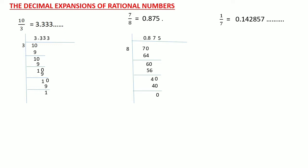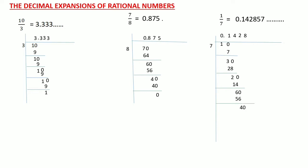Consider another example of a rational number 1 upon 7. Here the dividend is 1 and the divisor is 7. Since the dividend is smaller than the divisor, place a decimal point in the quotient and add a 0. 7 times 1 is 7; on subtraction we get the remainder as 3. Add a 0 — 7 times 4 is 28; on subtraction we get 2 as the remainder. Add a 0; 7 times 2 is 14; on subtraction we get 6 as the remainder. Add a 0; 7 times 8 is 56; on subtraction we get 4 as the remainder.